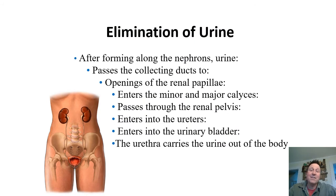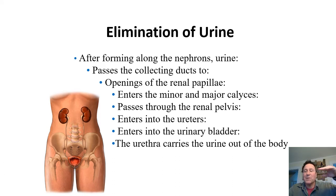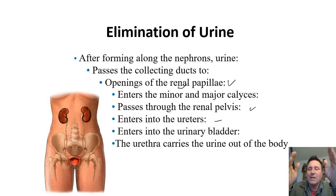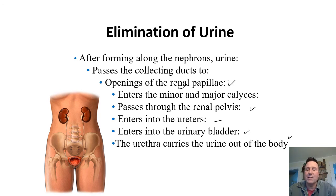The path that urine takes: it starts as filtrate back in the glomerulus, putting it into the Bowman's capsule. Then it goes through the proximal tubule all the way down. Out the collecting duct and into the minor calyx, then major calyx, the pelvis where it all collects, the two ureters carry it down, we'll talk about the bladder, and finally the urethra is the tube to the outside.